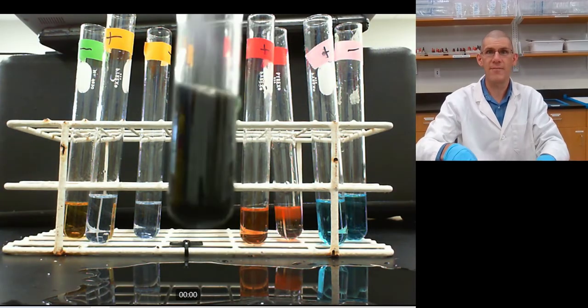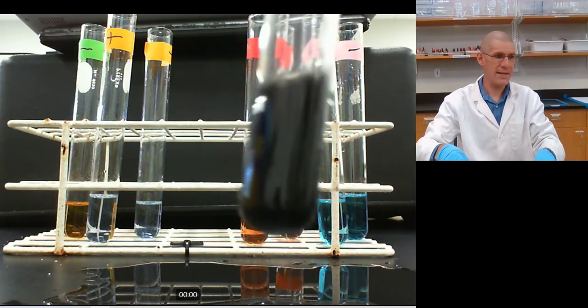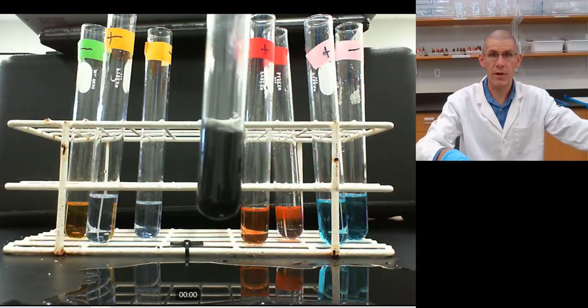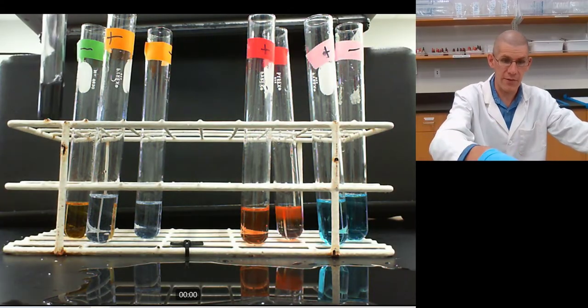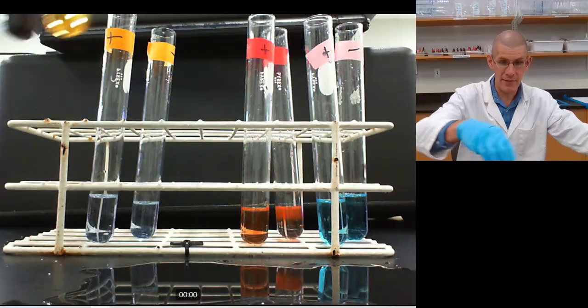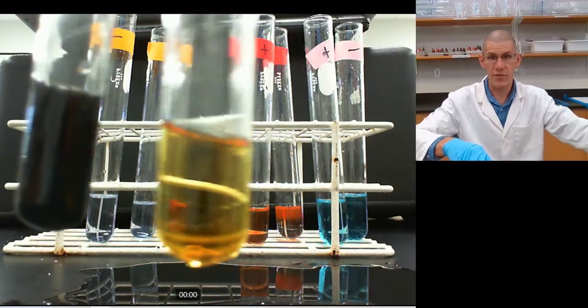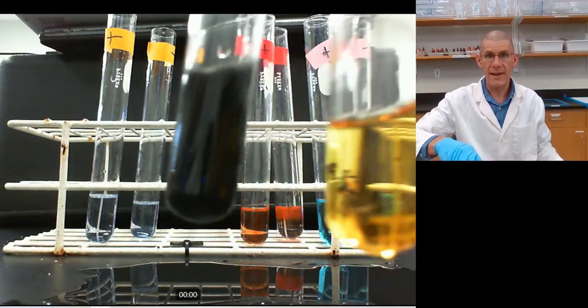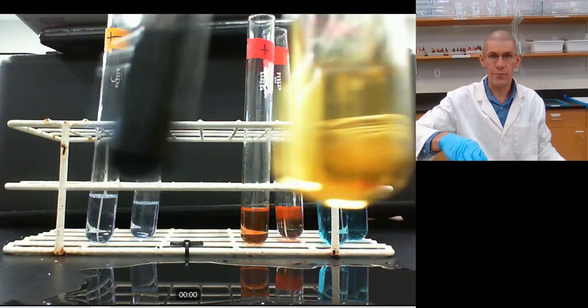Look at that. It turns a nice black color, and that's the reaction that occurs between Lugol's and starch when starch is present. So there's our positive control right there, our positive and our negative. The negative is just that dull amber, and the positive is this rich black.